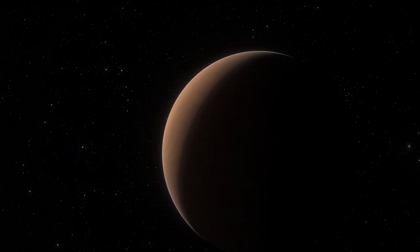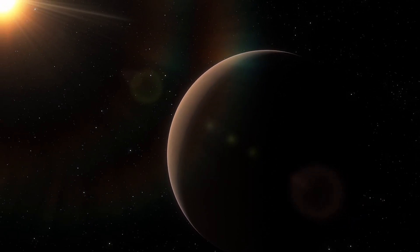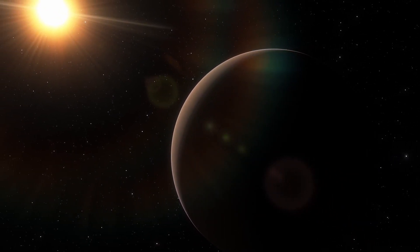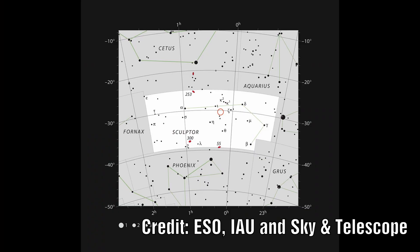The star at the centre of this system is called TOI 178. It resides about 200 light years from Earth in the constellation of Sculpta.